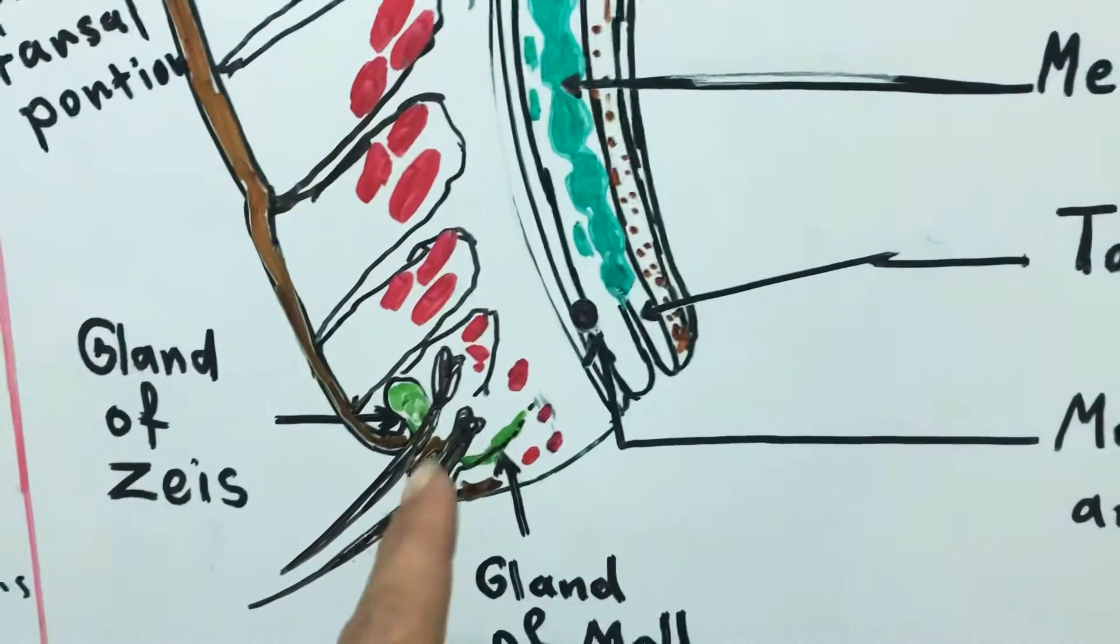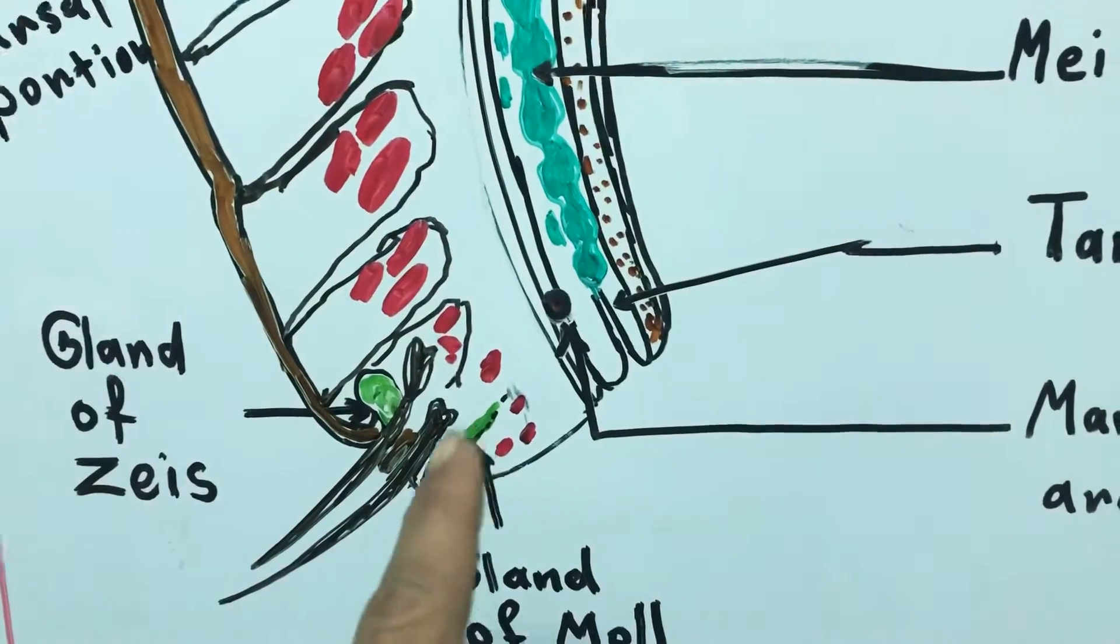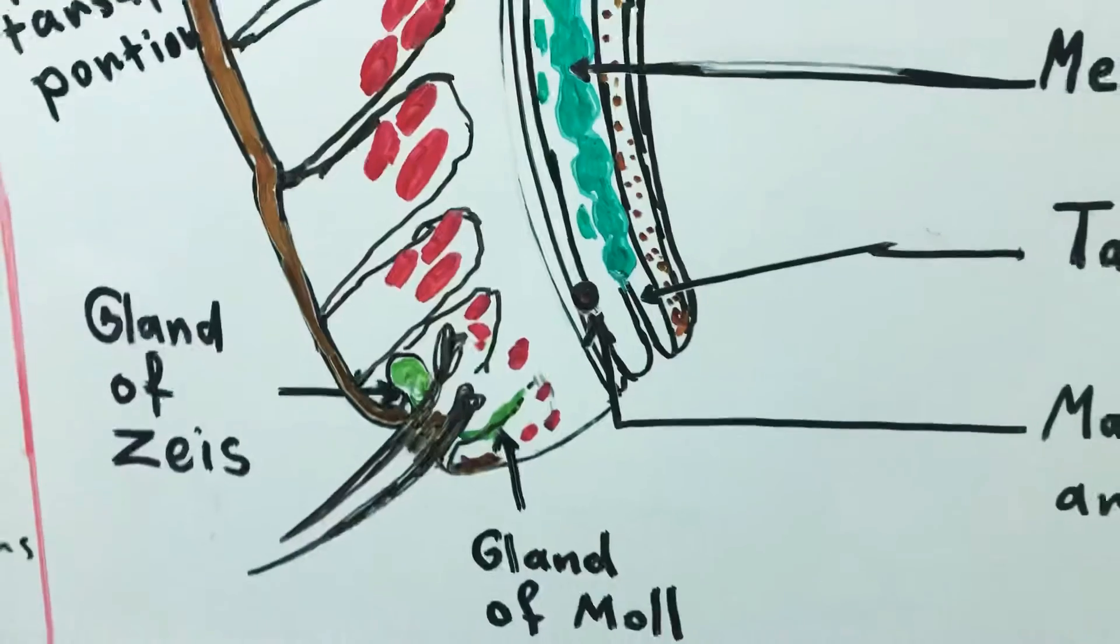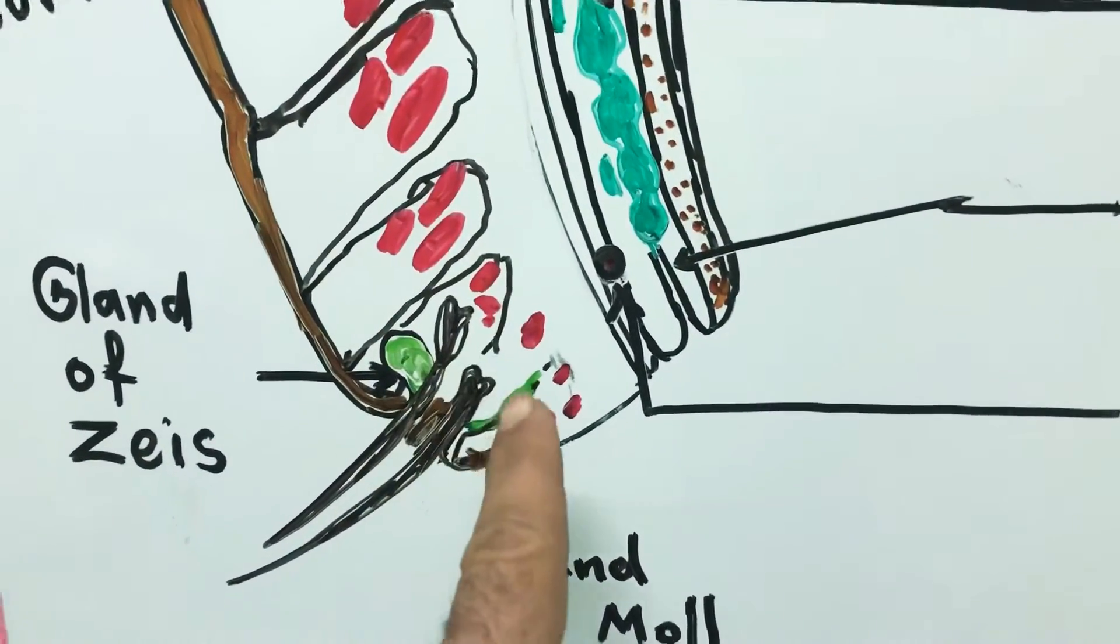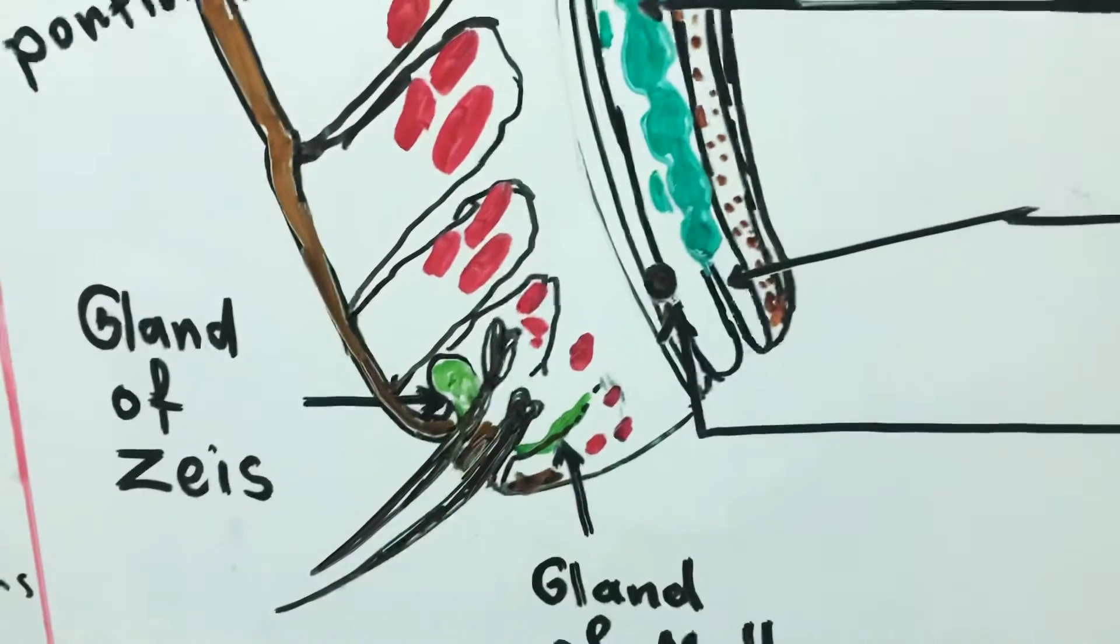In the ridge of the eyelid, there are hair follicles that will become the eyelashes. The eyelashes, hair follicles, are connected, as you see, to the sebaceous glands in the eyelid. The gland of Zeis and the gland of Moll.